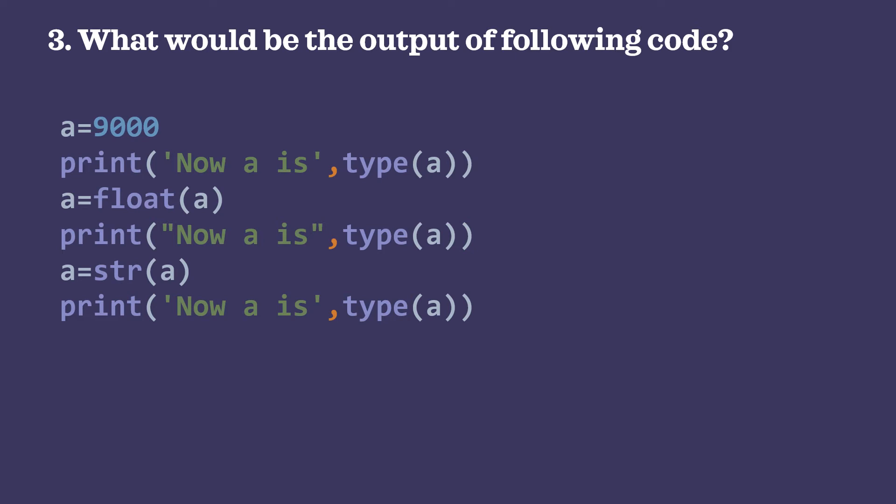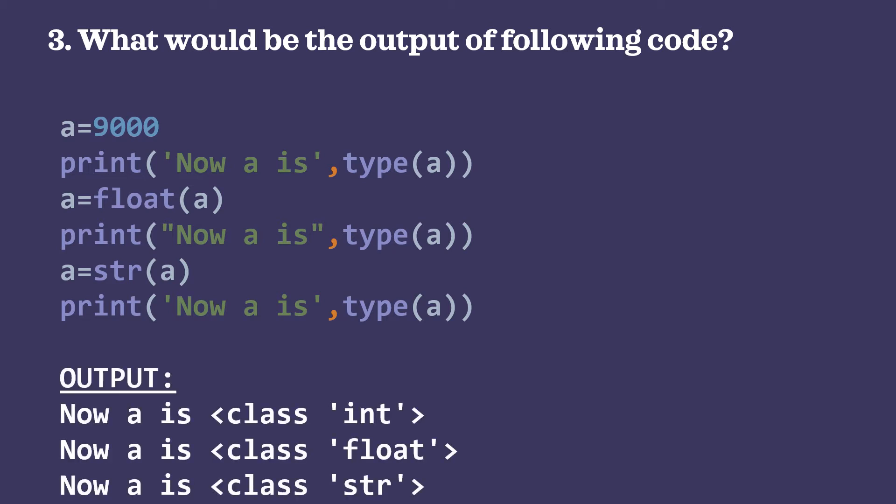Question 3: what would be the output of the following code? a = 9000; print('now a is', type(a)). The type() function returns the data type of the passed value. Since a is a numeric value, the output is 'now a is class int'. Then a = float(a) converts a to float, so type(a) is float. Then a = str(a) converts a to string, so type(a) is now string.